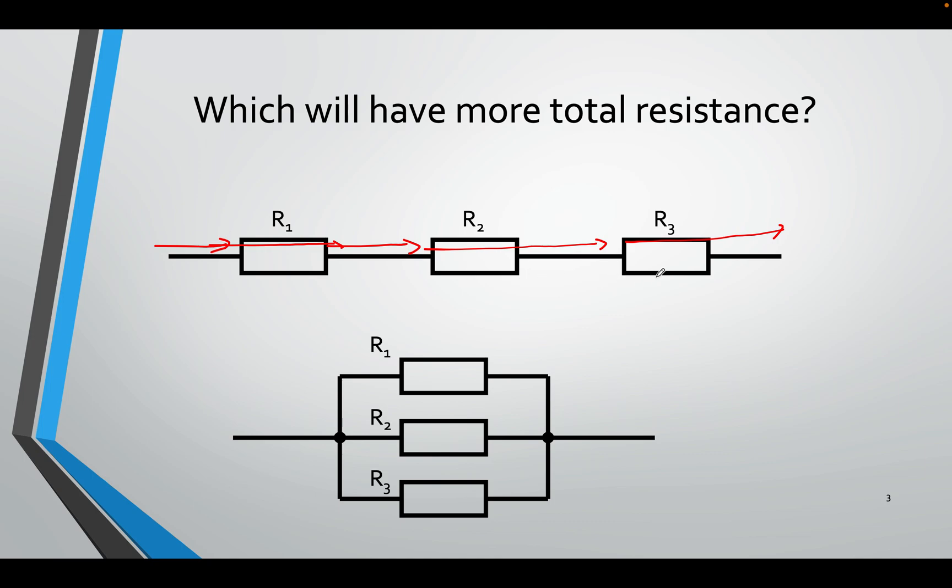But if I take the same resistors and I put them in parallel instead, you will realize the current reaches a junction and it will have a choice. It can go up, it can go straight, or it can go down.